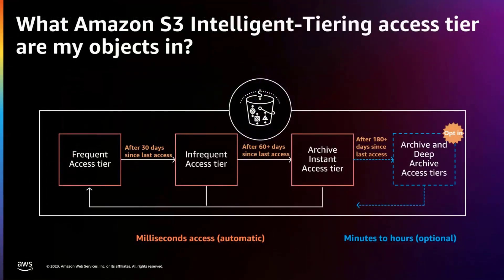Before the demo, I want to talk about the focus area: what Amazon S3 Intelligent Tiering access tier are my objects in? S3 Intelligent Tiering has multiple tiers — the frequent access tier, infrequent access tier, and archive instant access tier — and data moves across them automatically. After 30 days since last access in the frequent access tier, it moves down to infrequent access. Then after another 60 days in the infrequent access tier, it moves to the archive instant access tier. Optionally, archive storage classes are also available with Intelligent Tiering. We're going to look at where objects are in which specific tier at any given time.